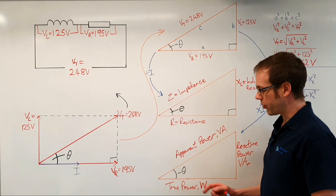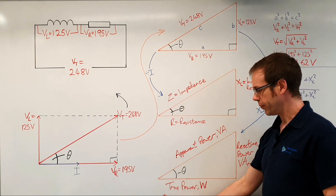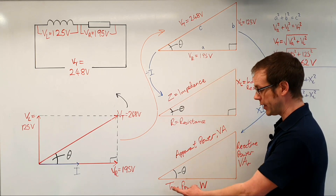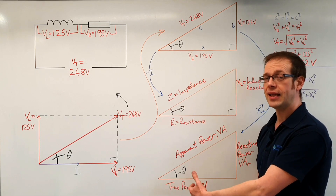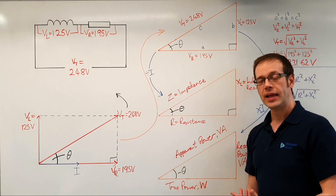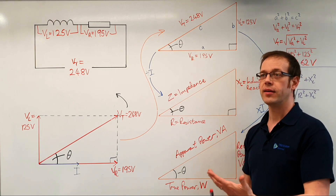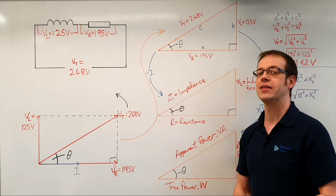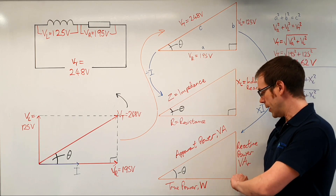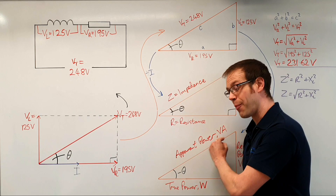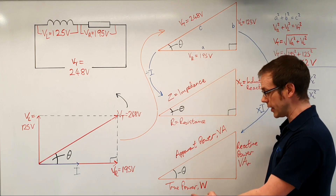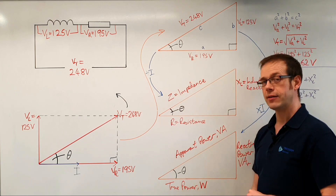Here we've got our three different kinds of power. True power is the useful power that the system is using — it is based on the resistive part of the circuit. Reactive power is wasted power — it's the power being used by either the inductive or capacitive part of the circuit, and it is the wasted power within the circuit. And then we've got our apparent power, which is the total amount of power that the circuit is dissipating — it's a combination of true power and reactive power.